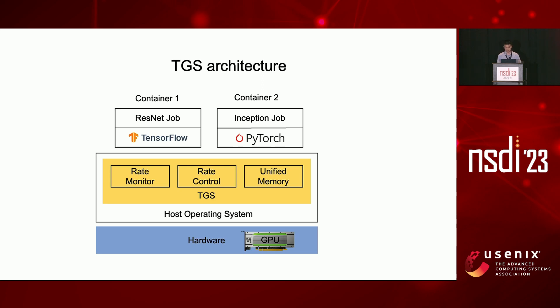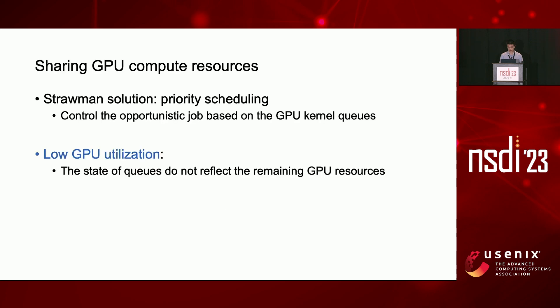The processes in the container issue GPU kernels to the GPU as they do with a dedicated GPU. TGS intercepts these calls and regulates GPU resource usage using rate monitor, rate control, and unified memory. The first challenge is to share GPU compute resources between containers without application knowledge. Inaccurately setting resource limits would either degrade job performance or leave resources unused. A naive solution is priority scheduling — intercepting GPU kernels and placing them into a production queue and an opportunistic queue based on job priority, with opportunistic kernels only scheduled when the production queue is empty.